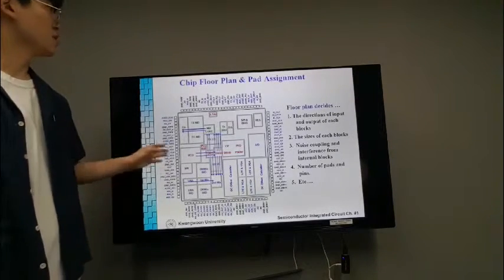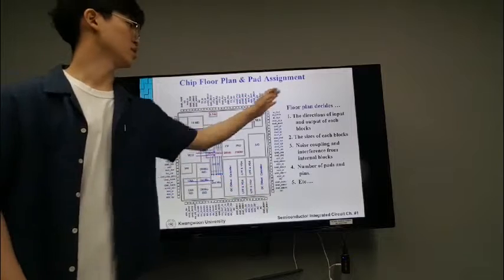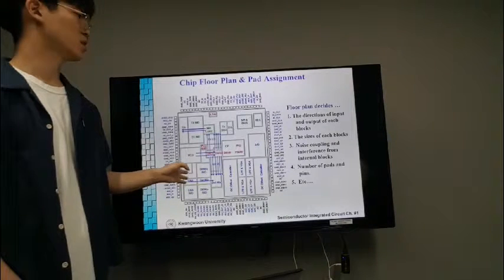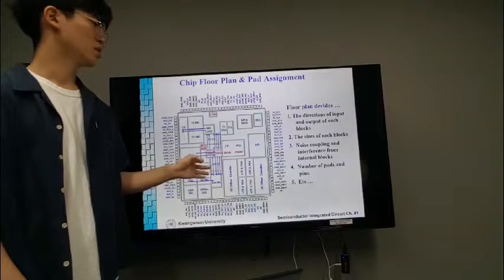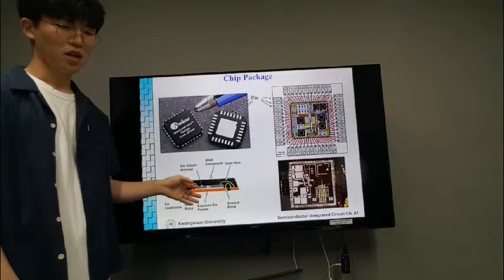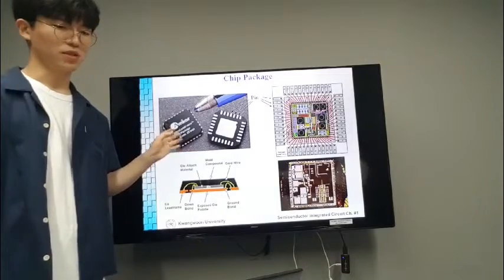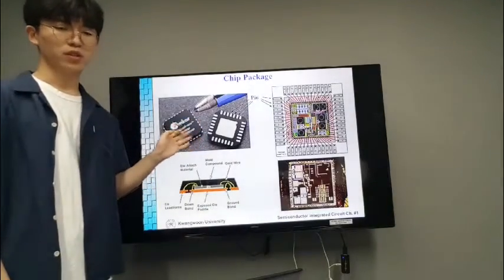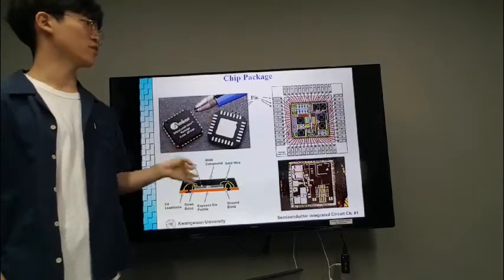This is an example of ZigBee SOC solution. And chip floor plan and pad assignment. Floor plan decides these components: the direction of input and output of each block, the size of each block, noise coupling and interference from internal blocks, and number of paths and pins. Chip package means that the die separate from the wafer is placed in the package and the wires are bonded and molded. There are some ways to package the die.